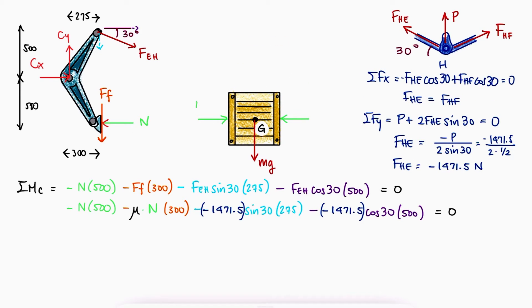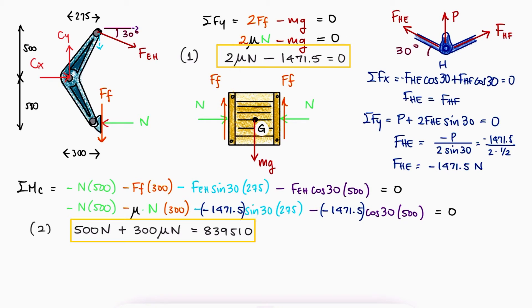With the free body diagram of the box, we can write the sum of forces in Y and substitute the friction force as mu n once again to find the system of two equations and two unknowns to solve for the normal and the friction coefficient.